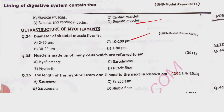Question 35: A muscle is made up of many cells which are referred to as myofilaments, myofibrils, sarcolemma, or muscle fibers. Correct option is delta — muscle fiber. Question 36: The length of the myofibril from one Z band to the next is known as sarcomere, sarcolemma, sarcoplasm, or muscle fiber. Correct option is alpha — sarcomere.